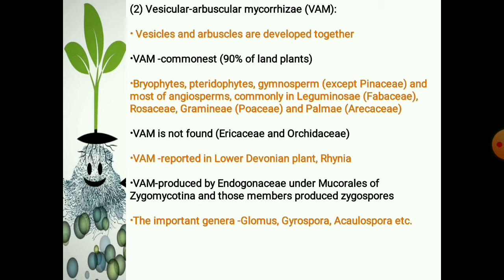VAM is not found in the Ericaceae and Orchidaceae, where other types of association are available. VAM has even been reported in the lower Devonian plant Rhynia. VAM is produced by aseptate mycelial fungi belonging to the Endogonaceae under Zygomycotina, and those members produce zygospores. The important genera involved in VAM are Glomus, Gigaspora, and Acaulospora. Most of the members are not culturable.